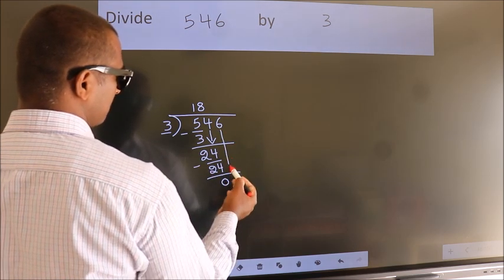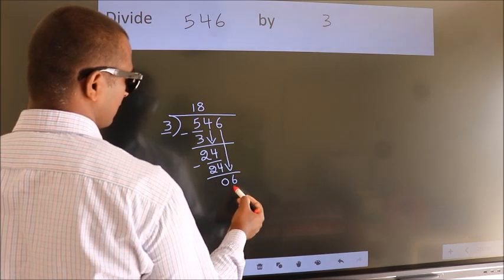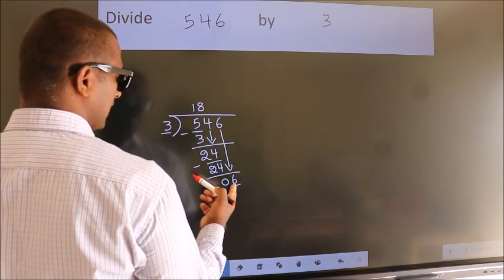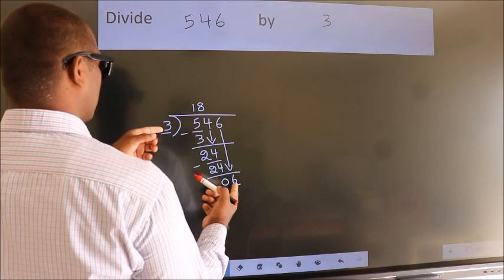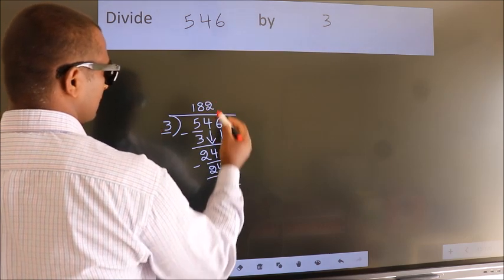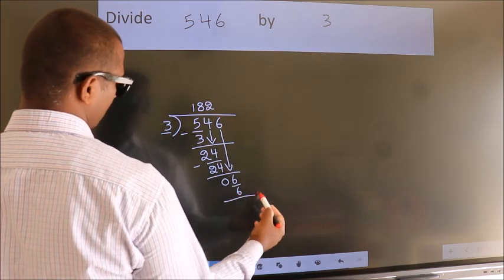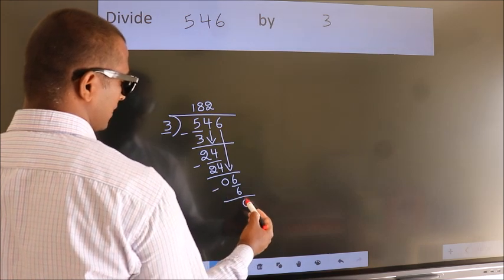After this, bring down the beside number. So, 6 down, giving us 6. When do we get 6 in the 3 table? 3 times 2 equals 6. Now, we subtract. We get 0.